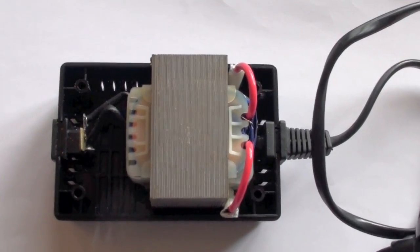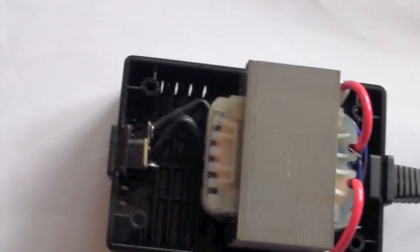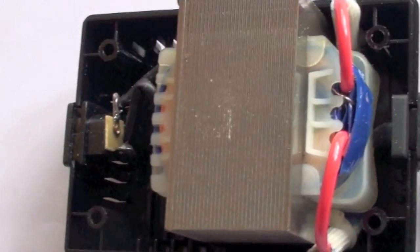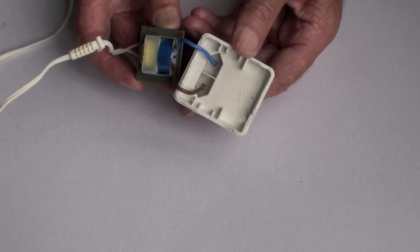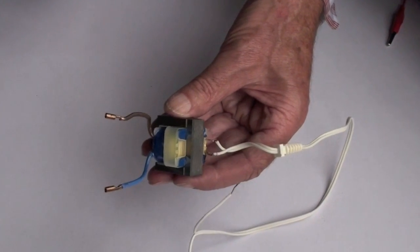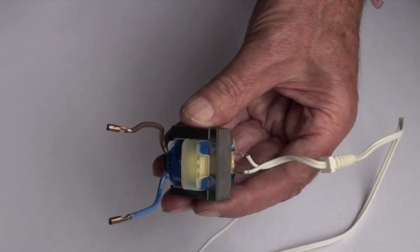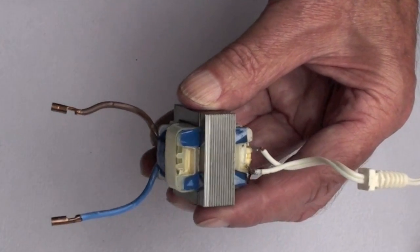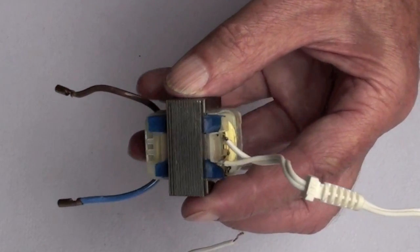In a transformer, the eddy currents cause heating and reduce the efficiency of the transformer. To reduce this problem, a transformer core is laminated. It's made up of thin plates of iron, and between these plates are thin layers of insulation. It's this insulation that stops the current swirling around and therefore losing energy from the magnetic field.